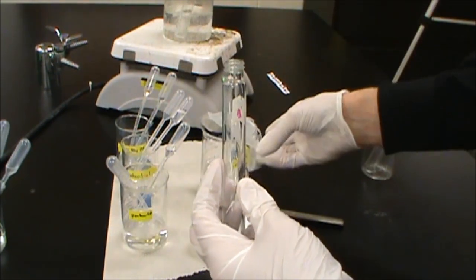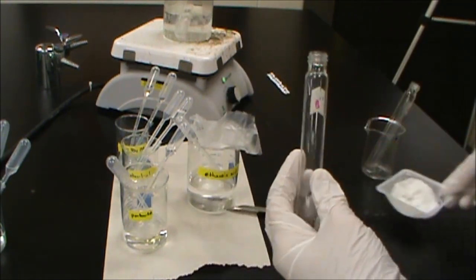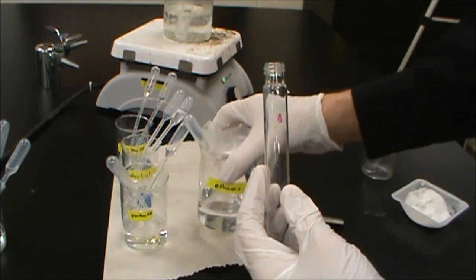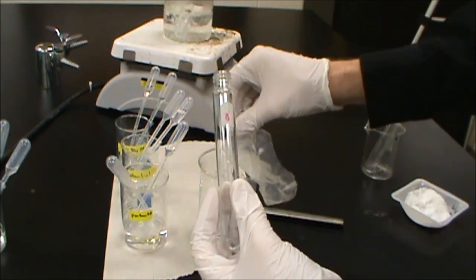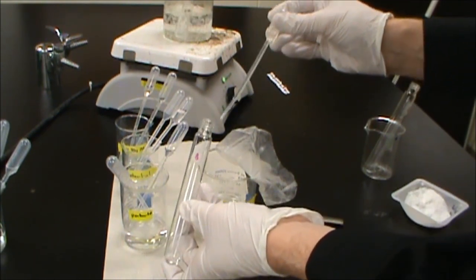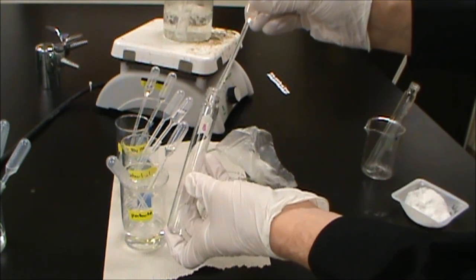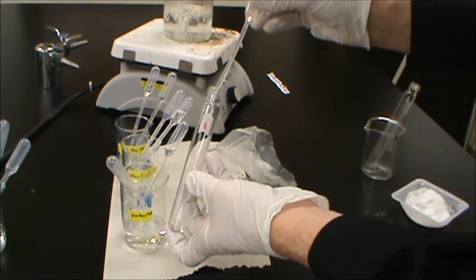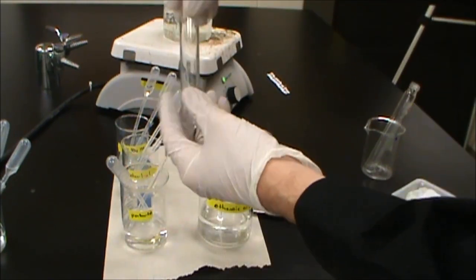And then we're going to add to that some ethanoic acid. So ethanoic acid, it's glacial acetic acid here. So this is pure, essentially, or close to pure. And so when you're doing that, you want to keep it covered when you're not using it. Otherwise, it'll smell pretty bad. So again, 20 drops of this. Okay, so now we have 20 drops of each in there.